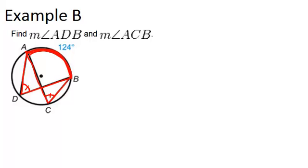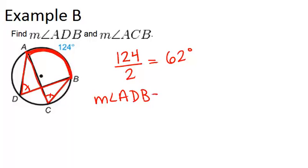And to figure out their measure, we just have to take the measure of the arc, 124 degrees, and divide by 2. And we get 62 degrees. So the measure of angle ADB equals the measure of angle ACB, and both of those equal 62 degrees.